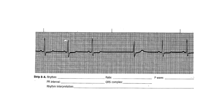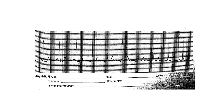Perform medication reconciliation, labs, and a 12-lead EKG. In 8.5, this rhythm is regular but you have two rhythms - the first three beats are one rhythm and the last part is a different rhythm. Both are regular within themselves: the first rate is 84 and the second rate is 94.